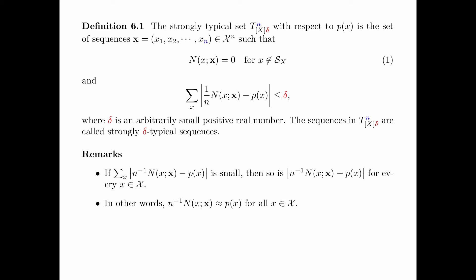In other words, the relative frequency of x is very close to the probability of x for all x. Therefore, if x is strongly typical, the empirical distribution of x is approximately equal to the generic distribution p(x).